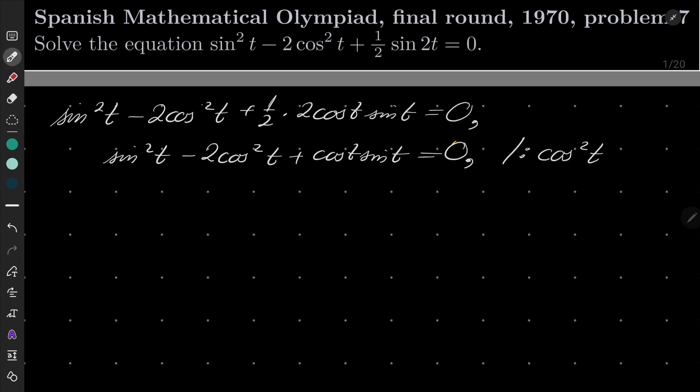After division, let's look: sin²t/cos²t is tan²t, cos²t/cos²t is 1, and here we will have sin(t)/cos(t), which is tan(t), equals 0.